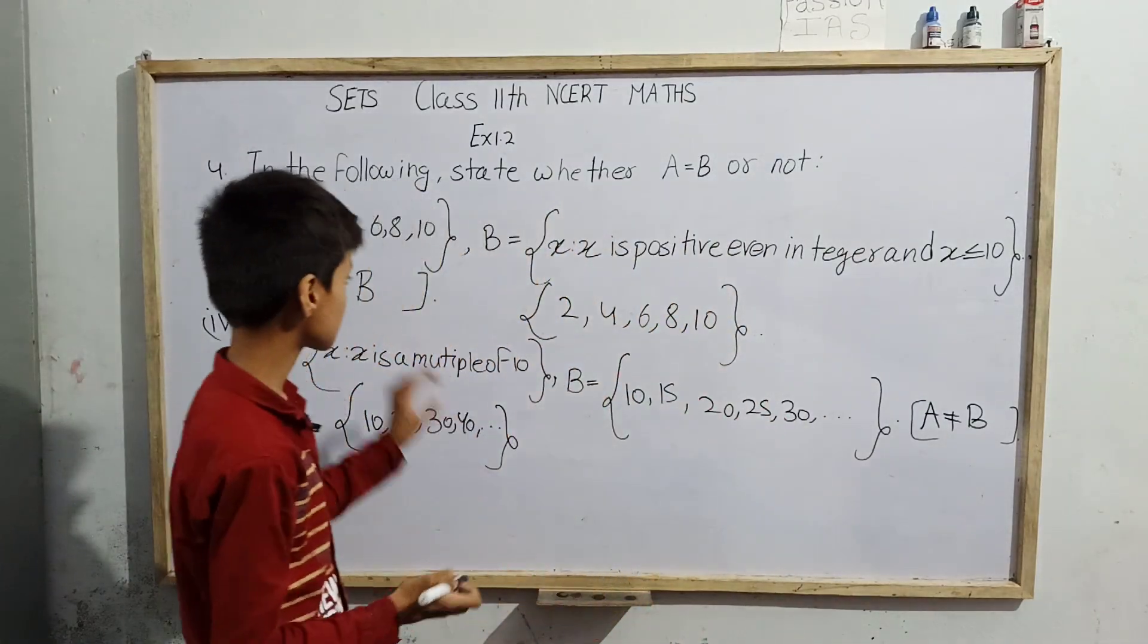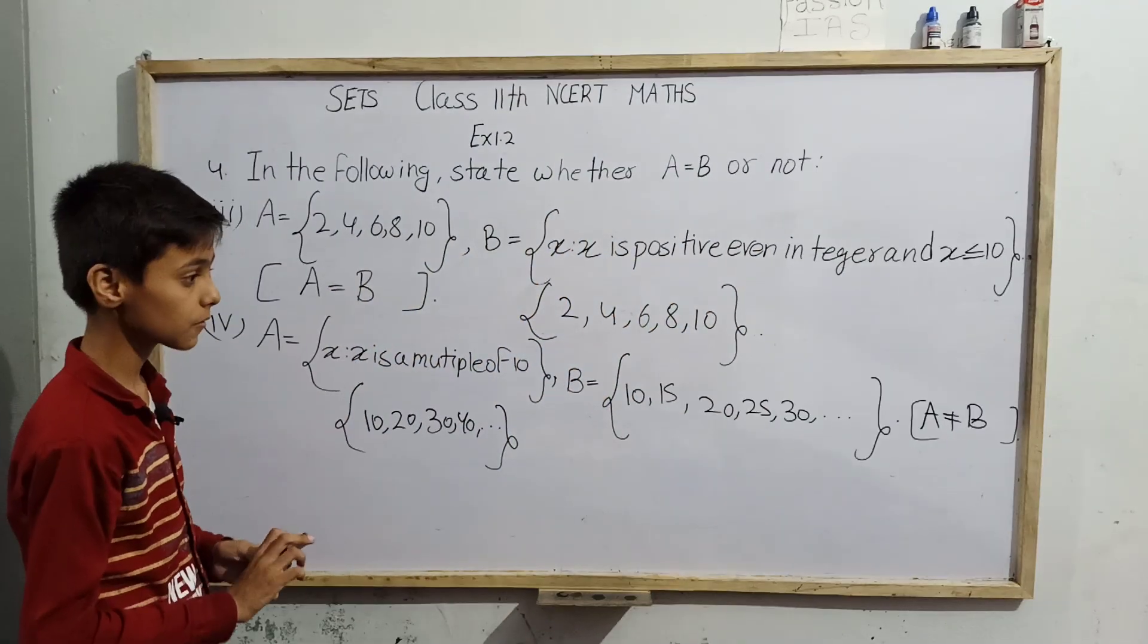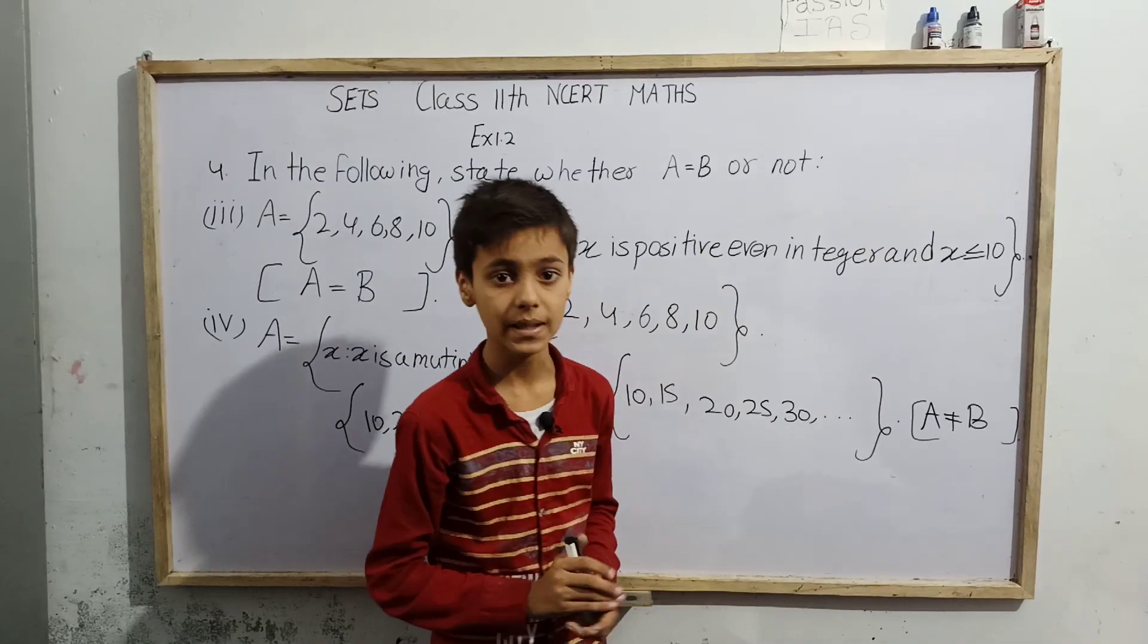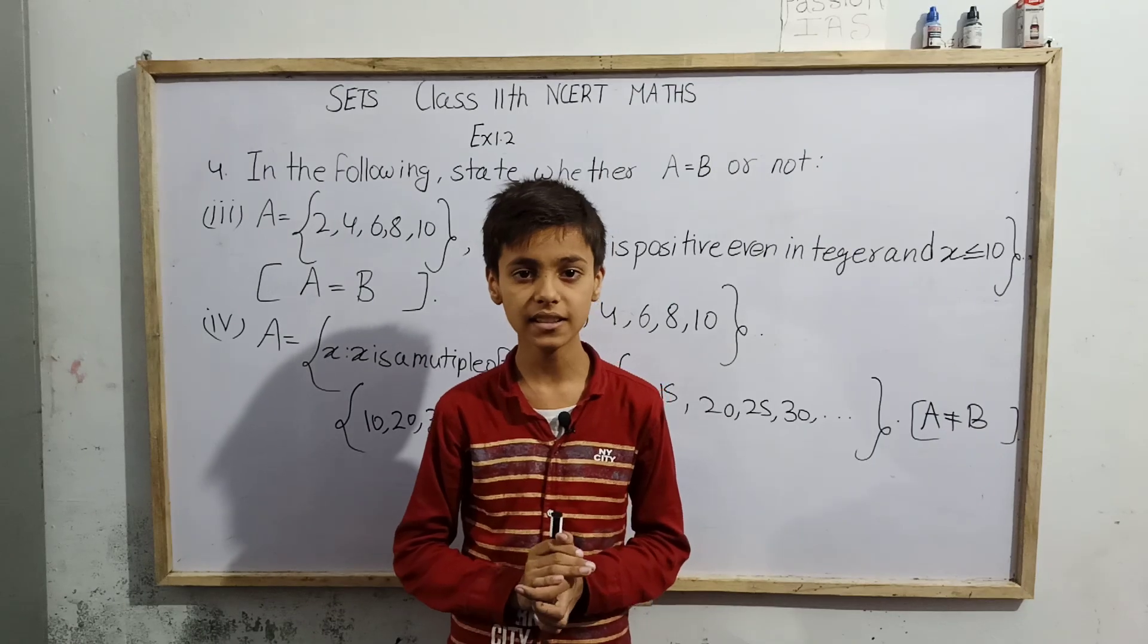So the answer is in the third question A equals B, and in the fourth question A is not equal to B. This was my topic, thank you.